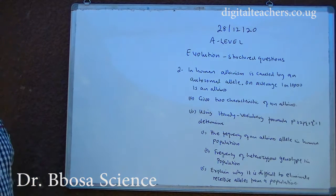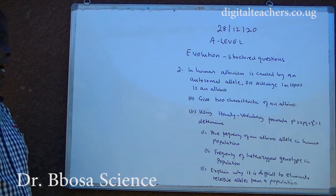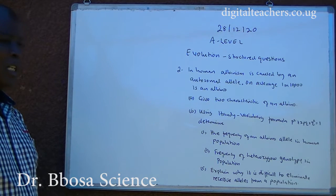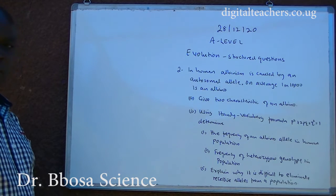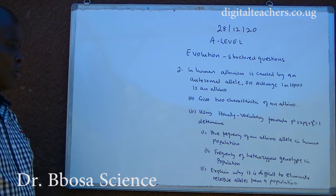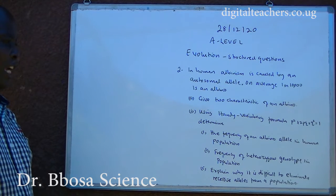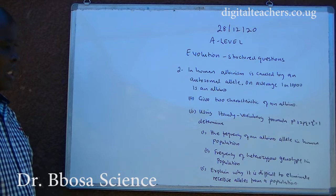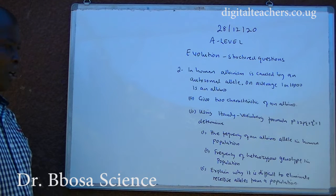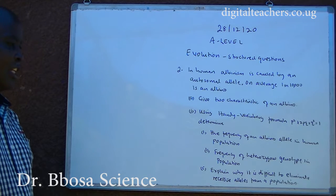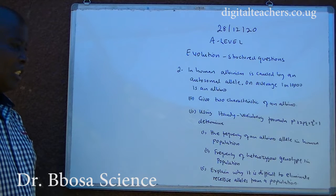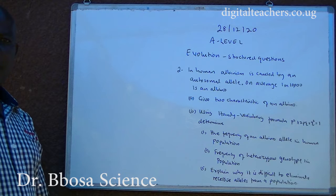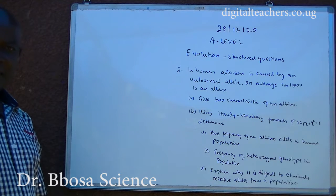One, the frequency of albinism allele in human population. Two, frequency of heterozygous genotype in the population. C. Explain why it is difficult to eliminate recessive alleles from a population. You can pause and answer.